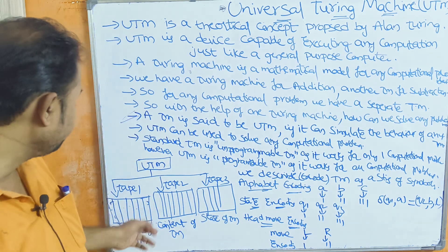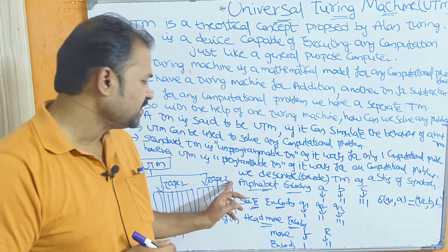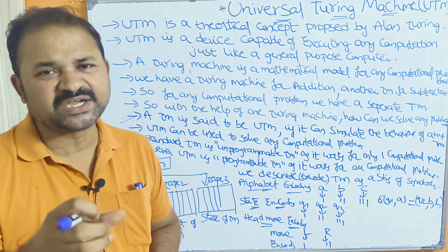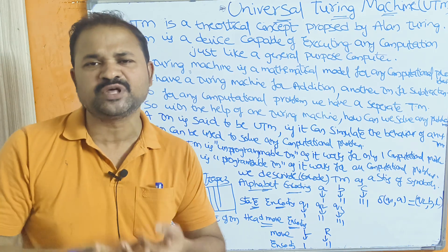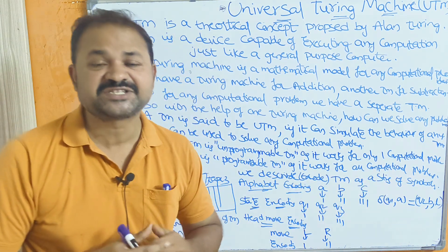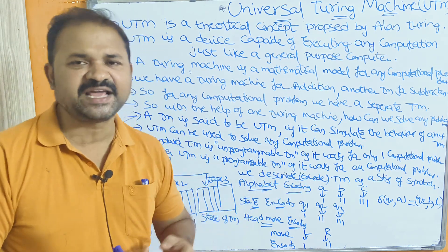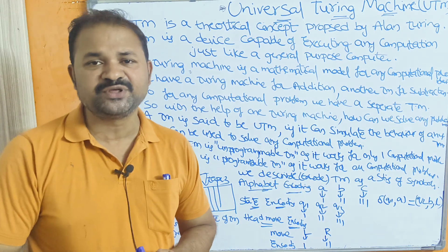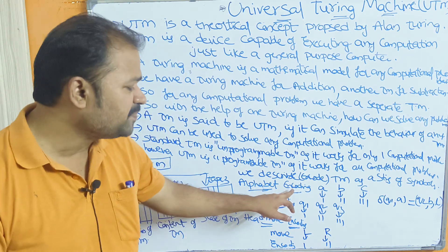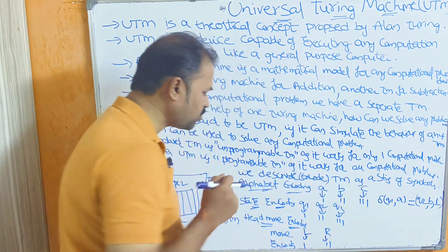Now let us see how we can describe the Turing Machine. We describe or encode the Turing Machine as a string of symbols. There are mainly three types of encoding: alphabet encoding — where A, B, C are alphabet symbols — state encoding, and head move encoding.